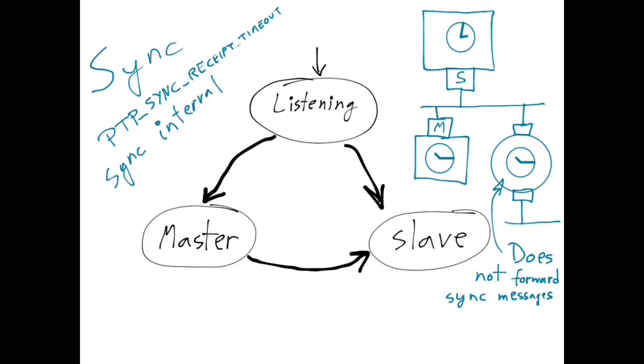Now, to finish up our simplified PTP state machine, there is one more transition, namely a transition from the slave state to the master state.